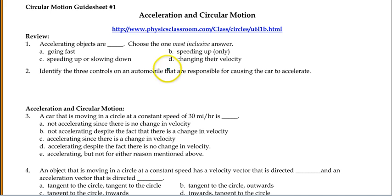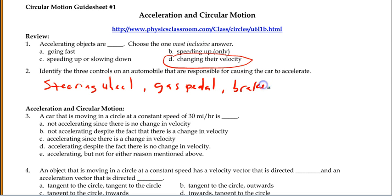Accelerating objects are changing their velocity. Now, because velocity is a vector, it has both size, its speed, and direction. They may be speeding up, slowing down, or changing direction. So in your car, you have the steering wheel, which is the one that most people would not think of as an accelerator. It allows you to change direction. You have the gas pedal, which allows you to speed up, and you have the brake, which allows you to slow down.